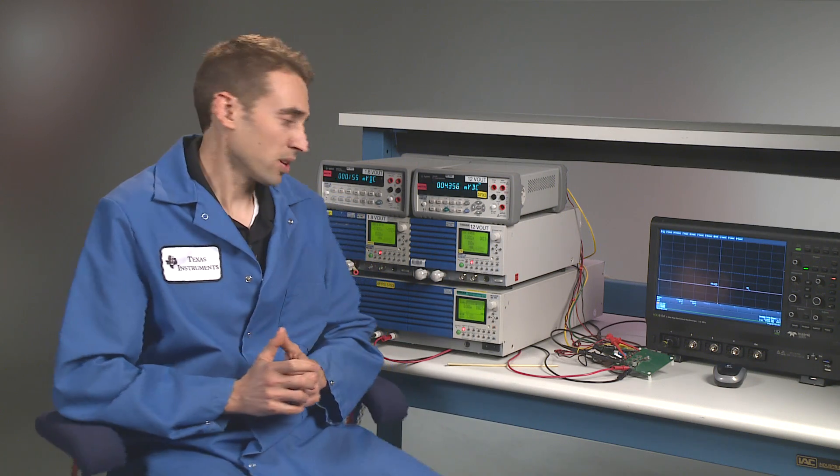For our demonstration today, we'll simulate an industrial environment and begin by providing a 15 to 42 volt line transient to the input from the line transient generator.